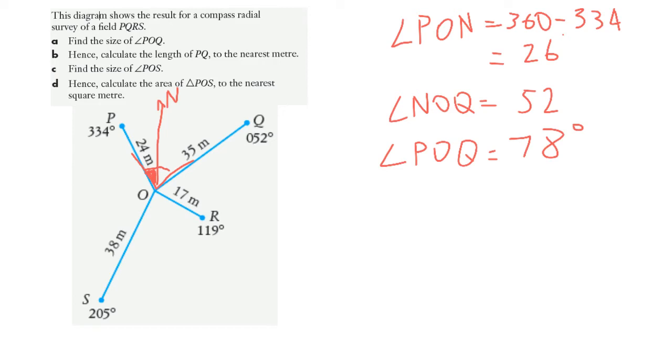The second thing we're asked to do is hence - hence means using what you have just done - calculate the length PQ to the nearest meter. I'm going to get rid of my north there and include now my triangle here. There's my triangle. Of course my angle at the center there is 78 degrees.